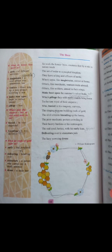Put on to the tent royal of their emperor who busied in his majesty surveys the singing masons building roofs of gold, the civil citizens kneading up the honey.